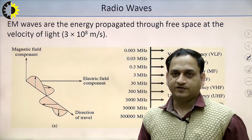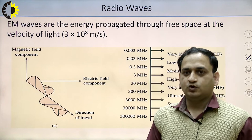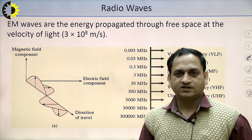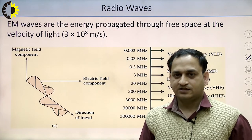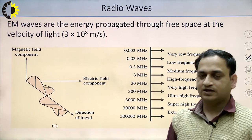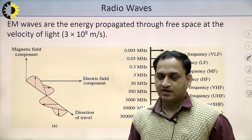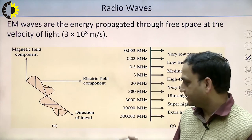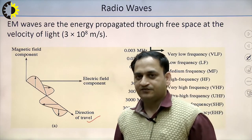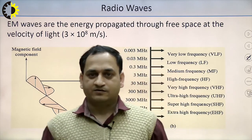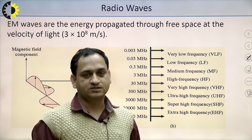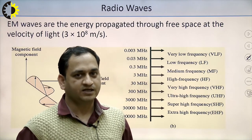Next is radio waves. As we know from EM field theory, the electromagnetic field comprises two components: the electric field and the magnetic field. Both the electric field and magnetic field are perpendicular to each other, and both are perpendicular to the direction of travel of the wave. So all three components — electric field, magnetic field, and direction of wave travel — are perpendicular to each other.